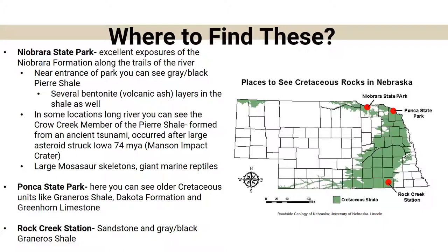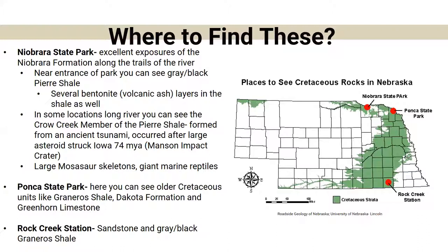Where to find Cretaceous fossils: Niobrara State Park and Ponca State Park have excellent exposures of the Niobrara formation, and you can see the mosasaur site. Rock Creek Station is another good spot. In some areas you can see the Crow Creek member of the Pierre Shale, which is evidence of the tsunami caused by the asteroid that struck Iowa about 74 million years ago. At Ponca State Park you can find Graneros Shale, the Dakota formation, and greenhorn limestone. Rock Creek Station has sandstone and different types of shale.